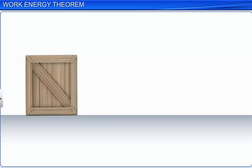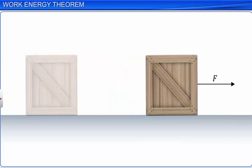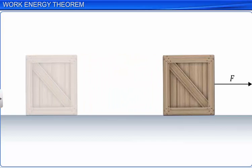Consider a wooden block which is at rest on a horizontal surface. When the block is pulled by an external horizontal force F, it is put into motion and is displaced through a certain distance D, and we say work is done on the block.